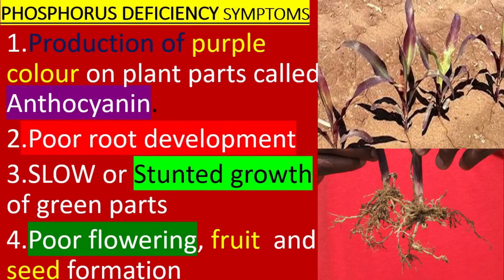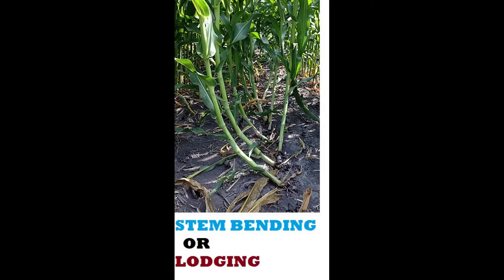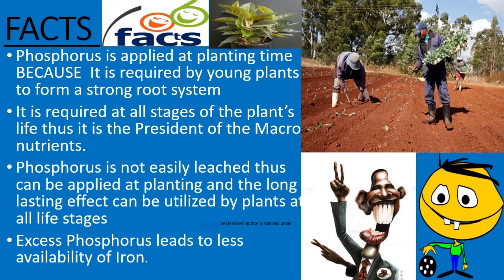Phosphorus is applied at planting time because it is required by young plants to form a strong root system. It is involved in making all food group types and is required at all stages of the plant's life, thus it is the president of the macronutrients. Phosphorus is not easily leached, so it can be applied at planting and its long-lasting effect can be utilized by plants at all life stages.